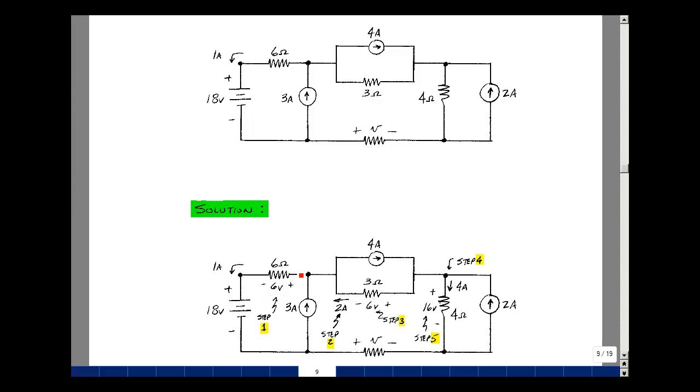Now at this node, I've got 3 amps entering, I have 4 amps leaving, and I have 1 amp leaving. So I have 5 leaving, 3 entering, and I have to have 2 more to balance that equation. So that's my second step. That 2 amps passes through a 3 ohm resistor, so I get 6 volts.